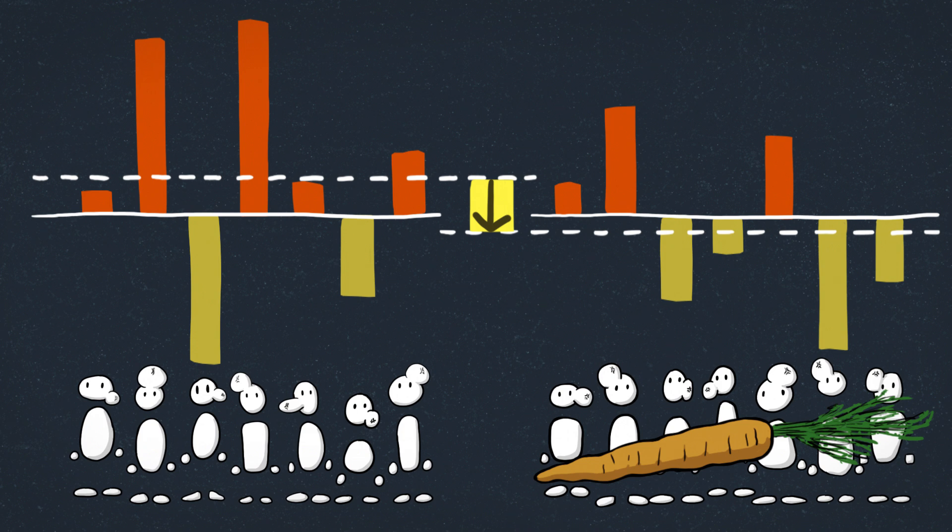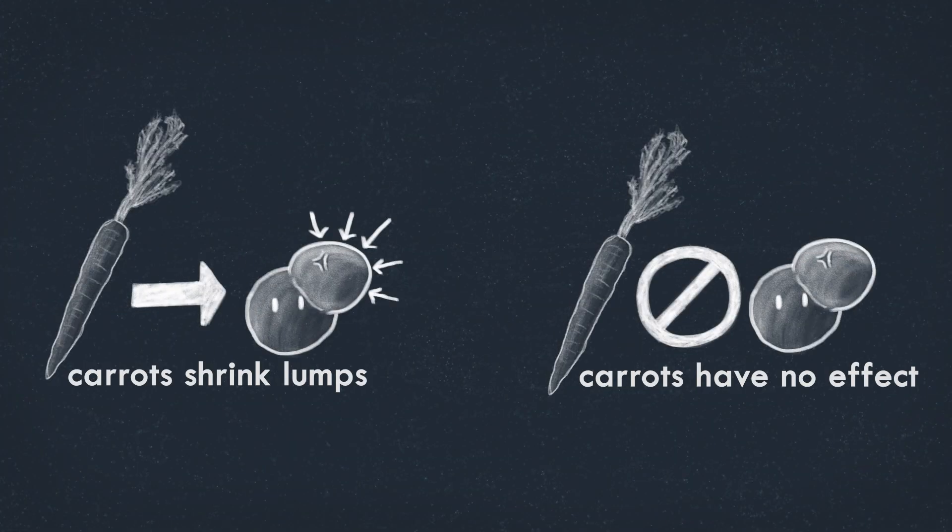Or do carrots have some small effect getting drowned out by the noise? We can't tell from the observations we made. And unfortunately we don't know which hypothesis is true. But there's not a strong reason to think that carrots shrink lumps. Lumps seem to shrink and grow more for other reasons. Or maybe not. 14 people isn't really enough to get a good result. That was a lot of work. Definitely too much work.